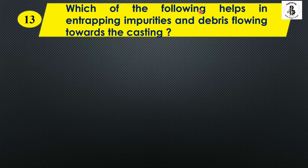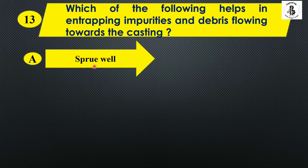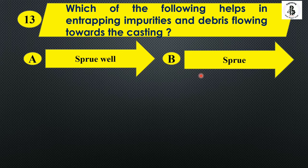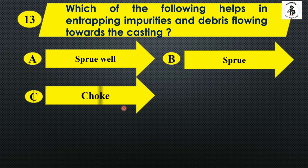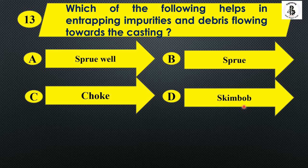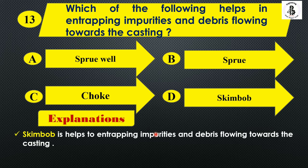Which of the following helps in entrapping impurities and debris flowing towards the casting? Option A: sprue well, Option B: sprue, Option C: chalk, and Option D: skim bob. The skim bob helps to entrap impurities and debris flowing towards the castings. So the right answer is Option D.